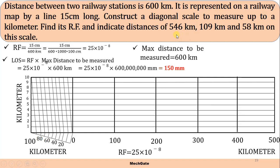Now on this scale we have to represent 546 kilometers. So 500 is over here, 40 is over here. For 46 kilometers we have to move diagonally up to 6, so this is 546 kilometers.